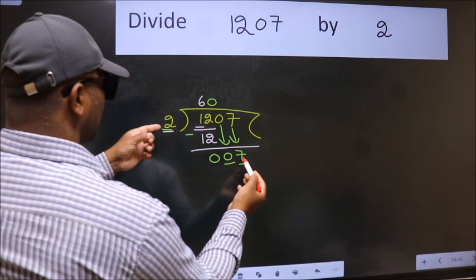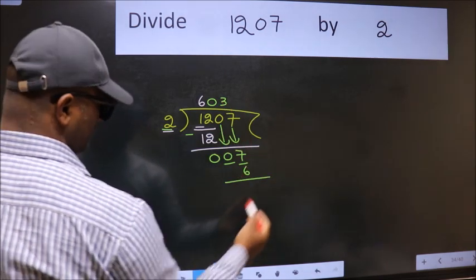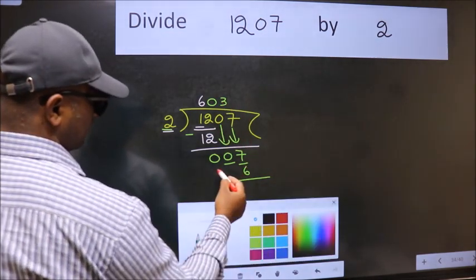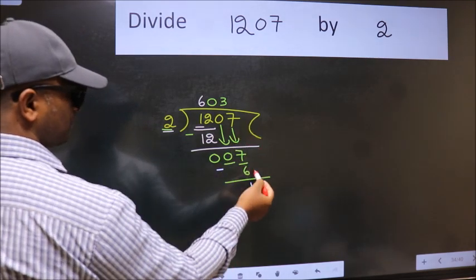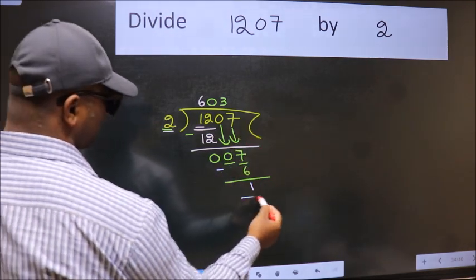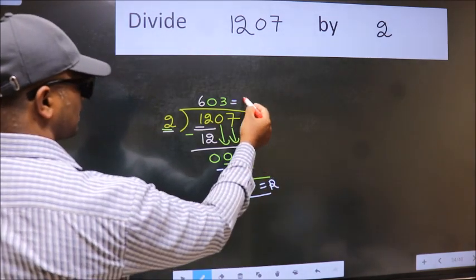A number close to 7 in the 2 table is 2 times 3 is 6. Now we subtract. We get 1. No more numbers to bring down, so we stop here. This is our remainder and this is our quotient.